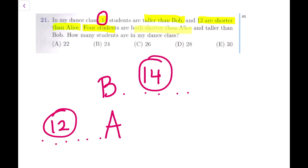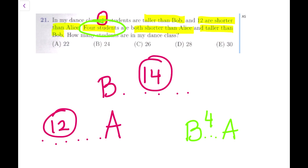But if you read the next part carefully: 4 students are both shorter than Alice and taller than Bob. Think about it carefully - these 4 students are shorter than Alice but still taller than Bob. That clearly means Bob is shorter than Alice. We have to think about the whole queue putting Alice and Bob into the situation. So let's have Bob here, and we know Bob is shorter than Alice, so there are 4 students exactly in between.